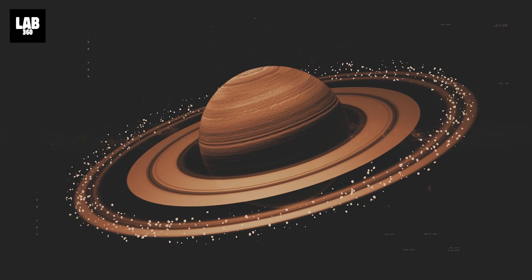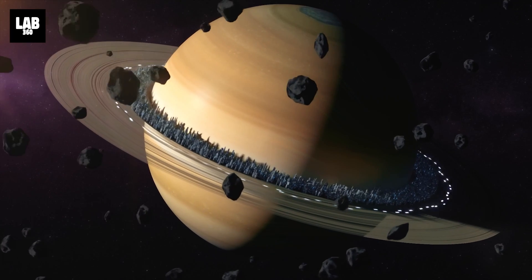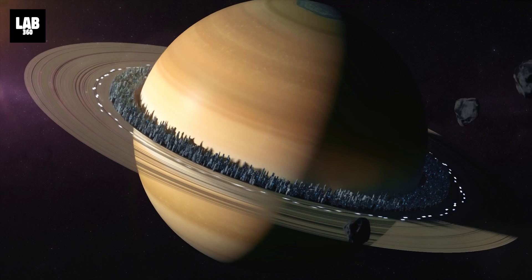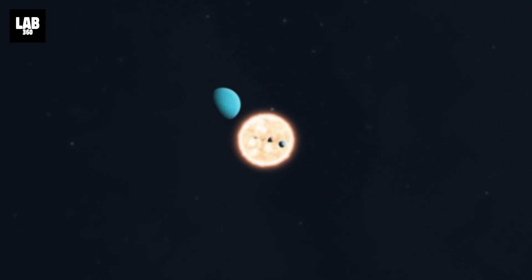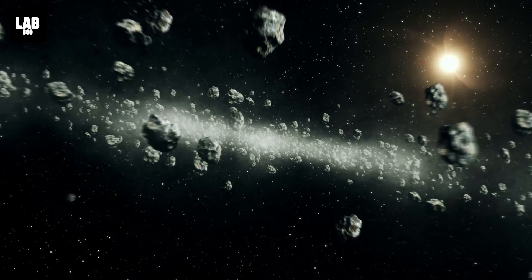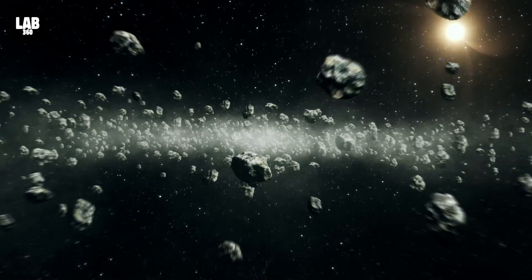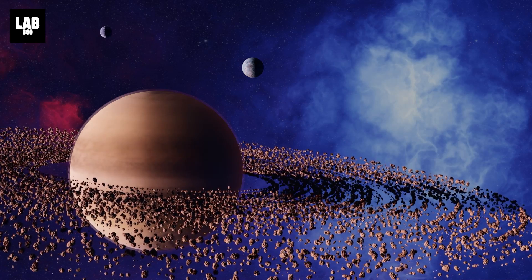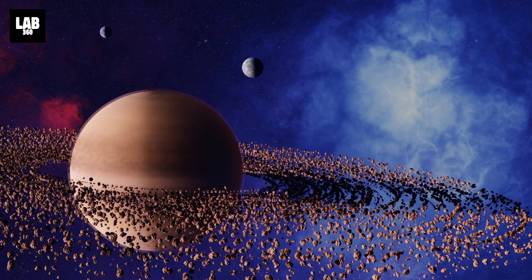So from where did Saturn get these rings? Formerly, scientists claimed that the rings may have come with the planet itself when the solar system was being formed 4 billion years ago. This was a natural assumption because it was believed that there must have been a lot of dust and particles that helped create this ring before everything eventually settled down.